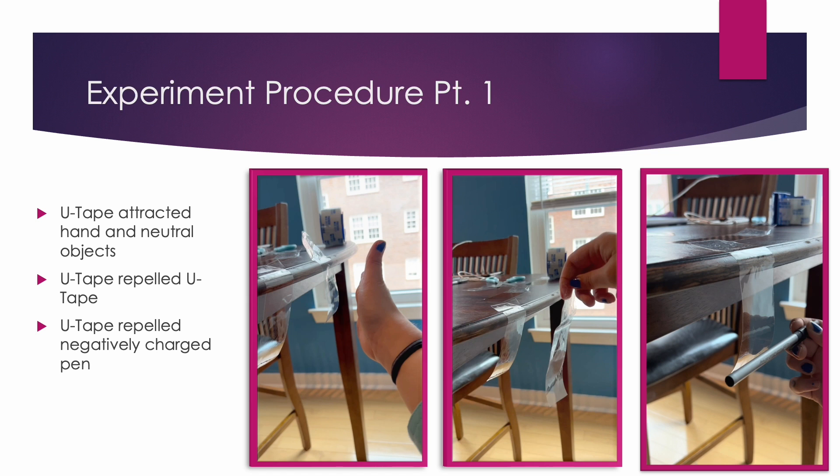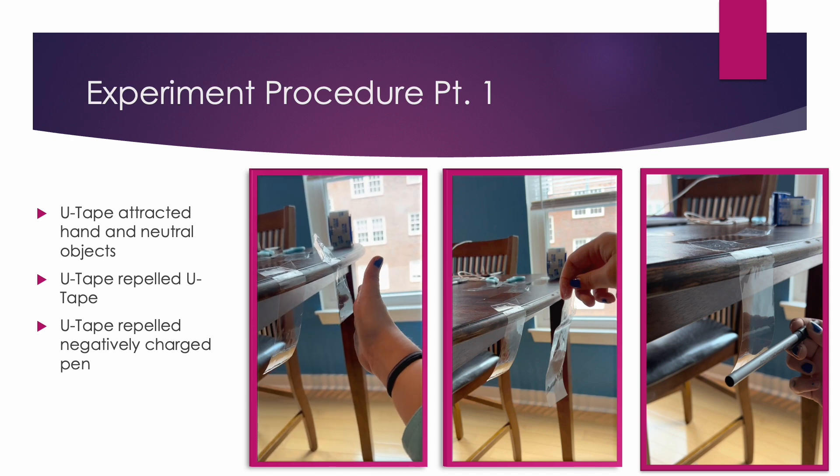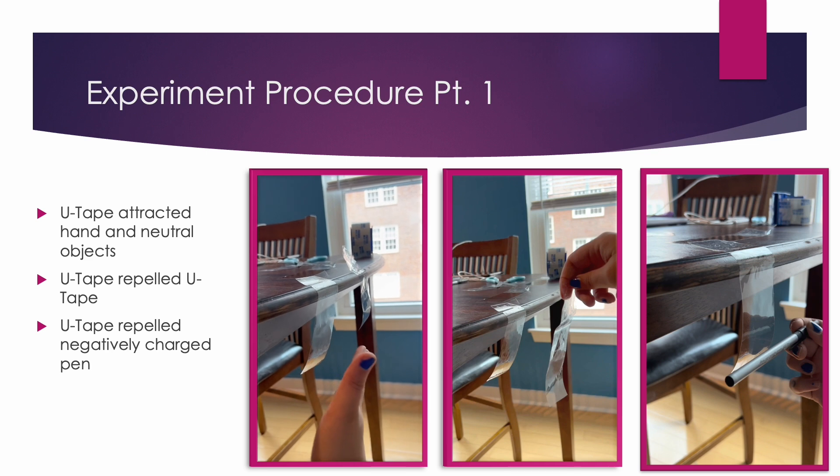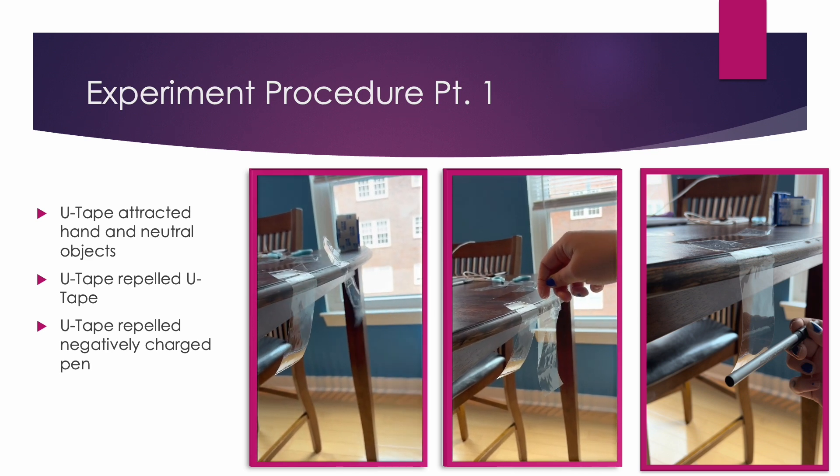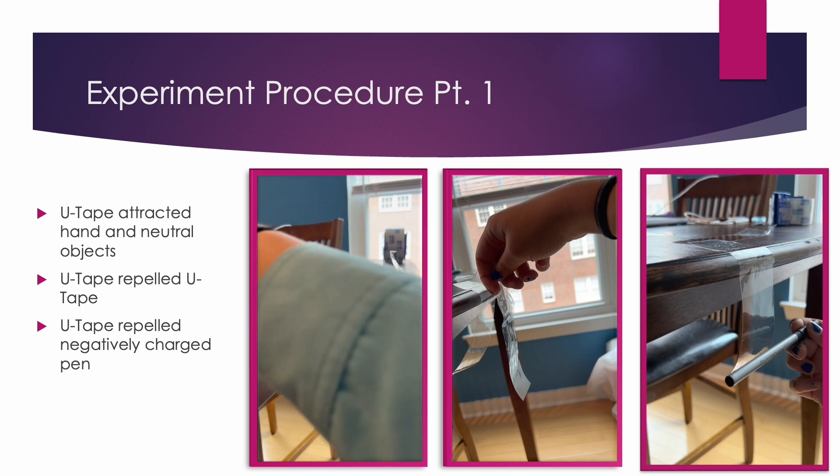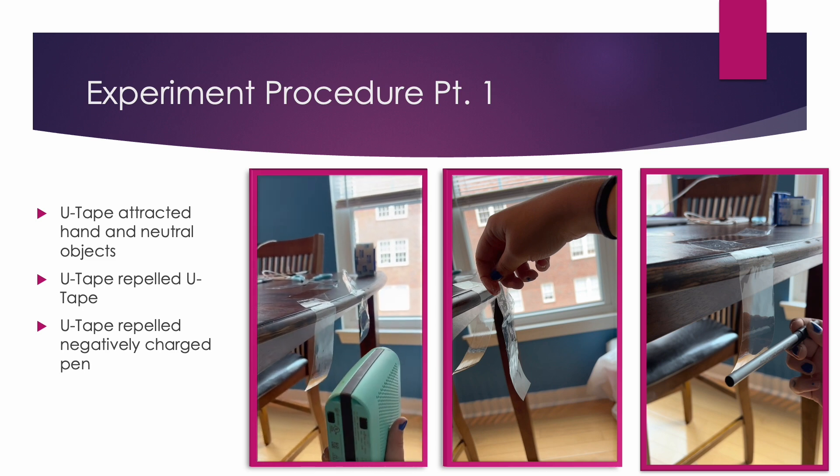To create a piece of charged U-tape, we used a piece of base tape on the table, laying another piece of tape on top, and quickly ripping it off. As you can see here, our U-tape attracted neutral items such as my hand, it repelled itself, and it attracted a negatively charged pen. Therefore, we can deduce that the U-tape is positively charged.